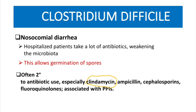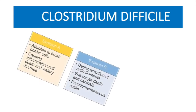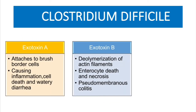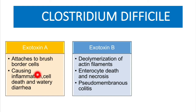Clostridium difficile produces two kinds of toxins: Exotoxin A and Exotoxin B. Exotoxin A attaches to the brush borders of the enterocytes, causing inflammation, cell death, and watery diarrhea. So Exotoxin A is responsible for watery diarrhea.